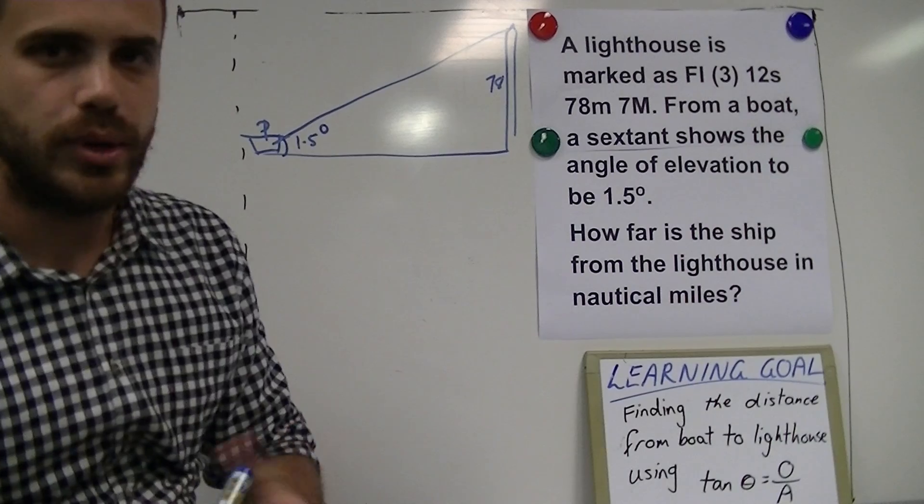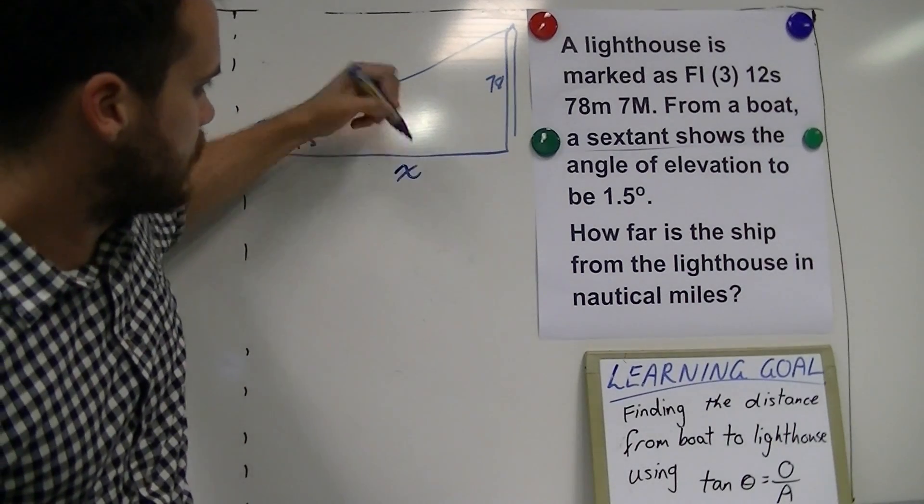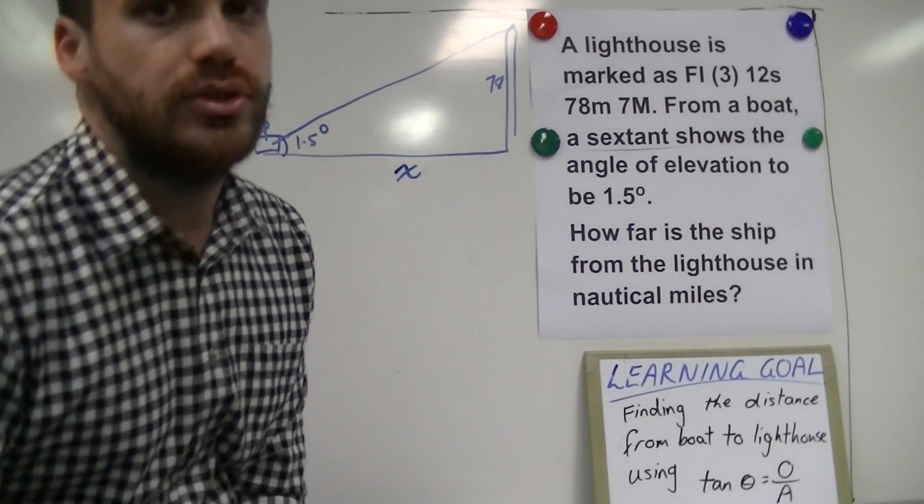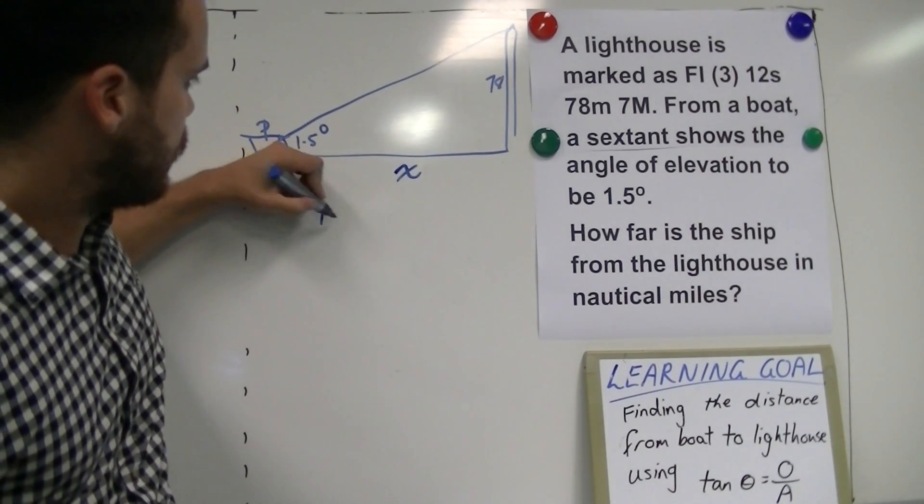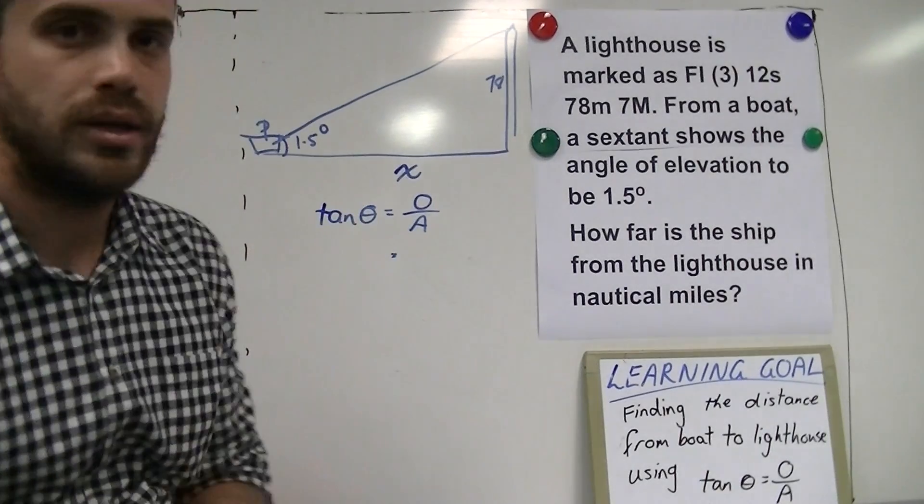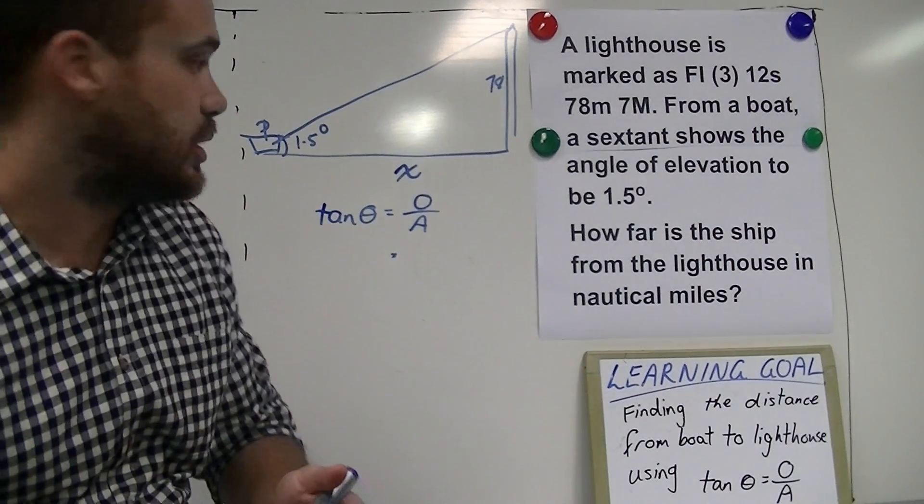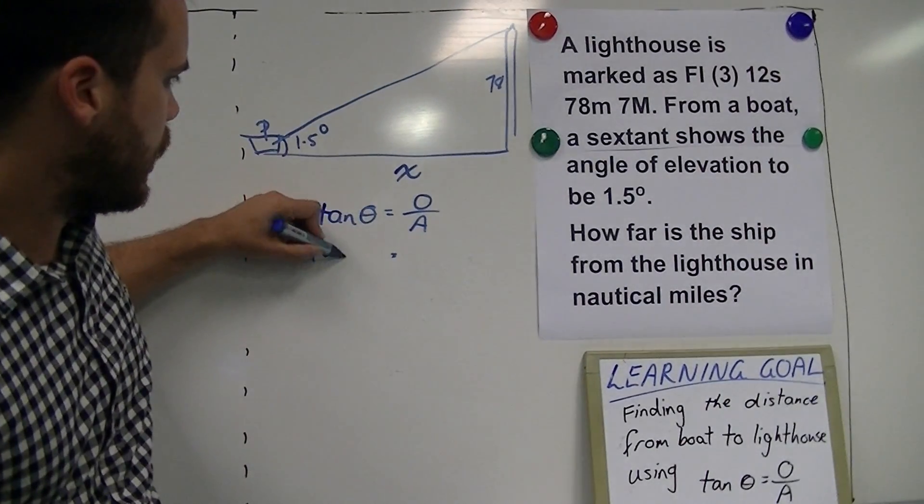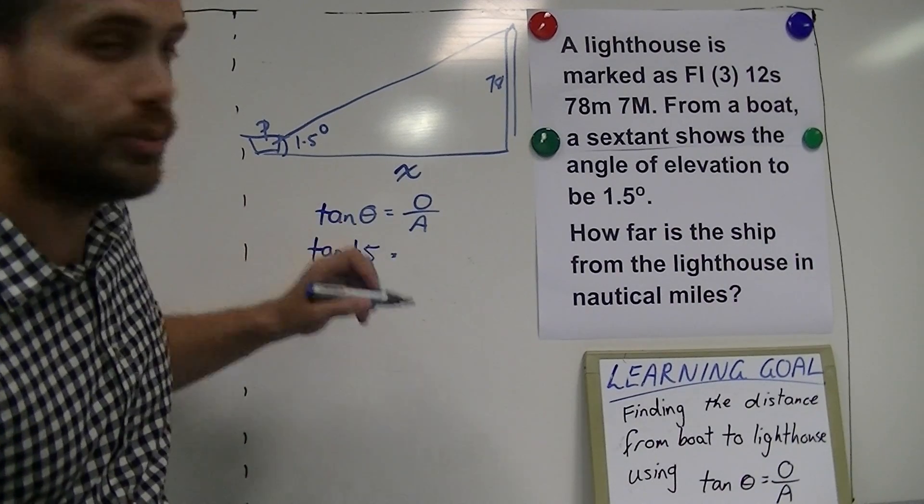Now the whole point of the question here is to find this distance x. To do that we can use tan theta equals opposite over adjacent. Start putting some values in there. Our angle is 1.5 so we can put that in there.